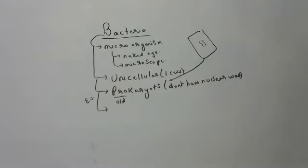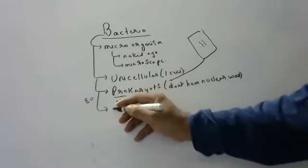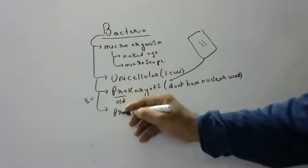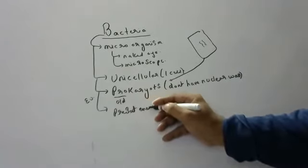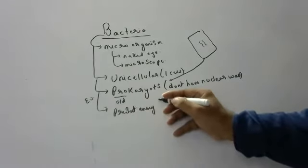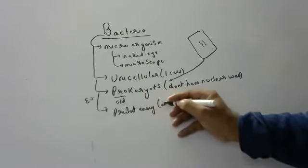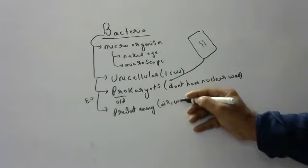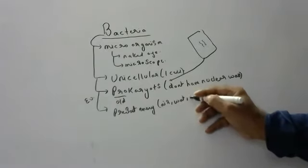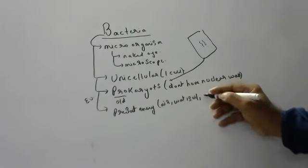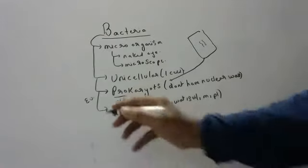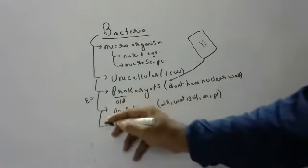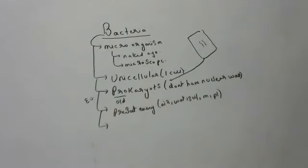Bacteria are omnipresent — they are present everywhere. They are present in hail, in water, in soil, on mountains, even on planets. Everywhere they can survive. They are omnipresent, present like a god.